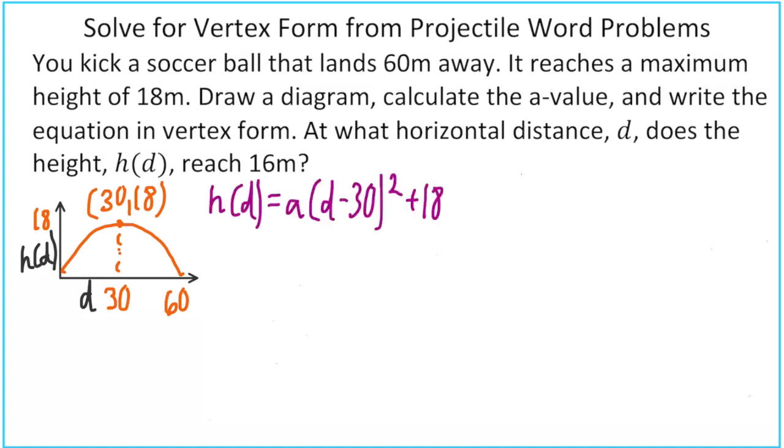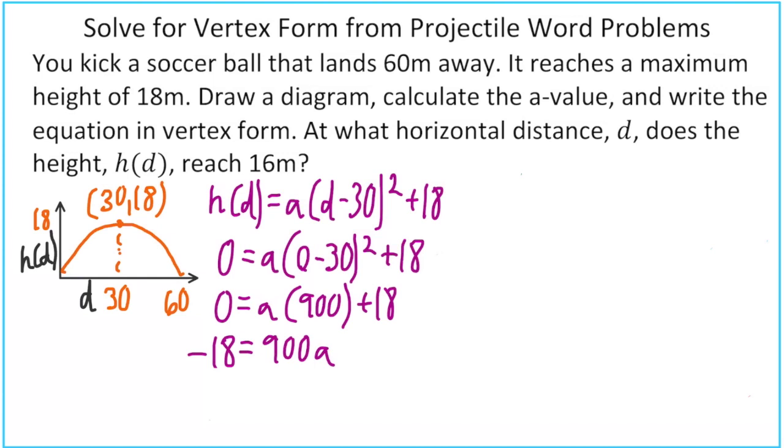And we are missing our a value again. So let's go ahead and use our reference point of 0, 0. We'll plug that in. And now we can go about solving for a. So 0 minus 30 is negative 30. Negative 30 squared would give us 900. And then we're going to move that positive 18 to the other side, where it becomes negative 18.